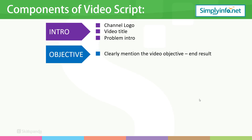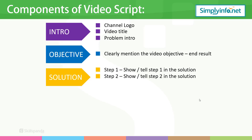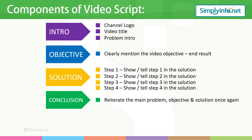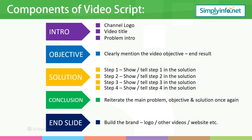The second component is objective. Clearly mention the video objective or objectives — the end result. By watching this video, what your viewers are going to get — that is the objective. And then solution: this includes few steps, like step 1, step 2, step 3, step 4. You need to clearly tell the steps within that particular video, because your viewers and subscribers have to follow your video clearly and easily. And then conclude — reiterate the main problem, objective, and solution in a few seconds, around 20-30 seconds, so that they will understand clearly what they watched. And finally, end slide — that is where you need to build brand: your logos, other videos, website. So these are the components of a video script.